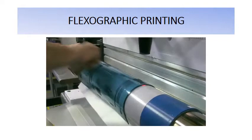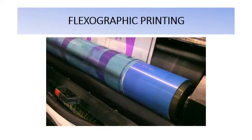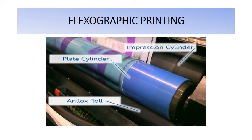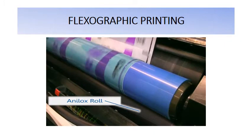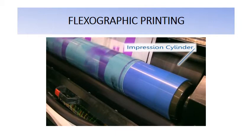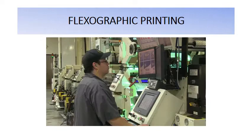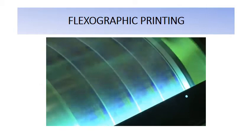The flexo printing press is composed of a number of stations corresponding to how many colors can be printed — label technology can print up to ten colors in one pass. In each station there are three roles: the anilox roll, the plate cylinder, and the impression cylinder. The anilox roll carries ink from a reservoir and places it on the printing plate. The plate cylinder holds the photopolymer plate, and the impression cylinder supports the substrate as ink is transferred. The ink in flexo printing is fast-drying, so it dries as the material web moves through each station.